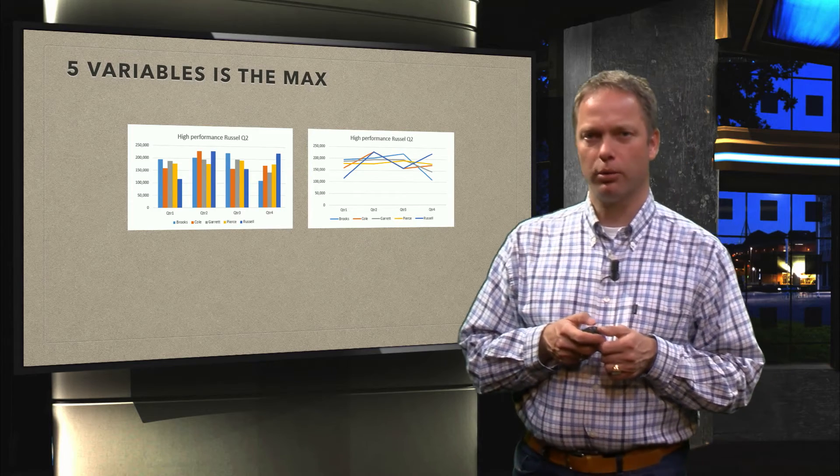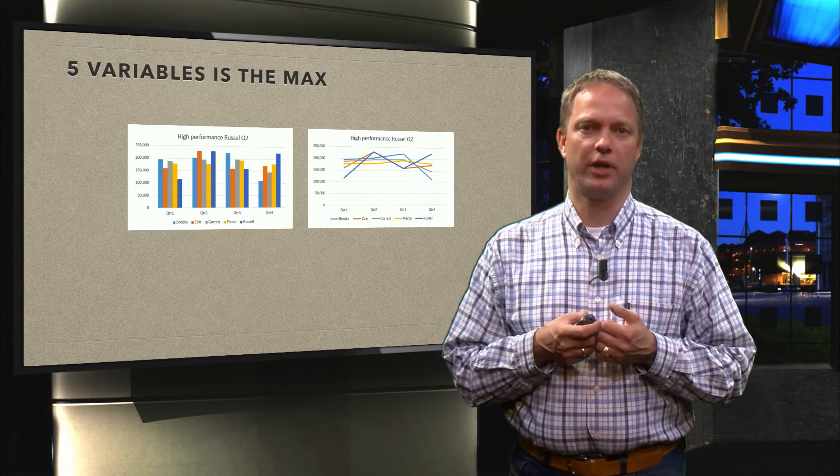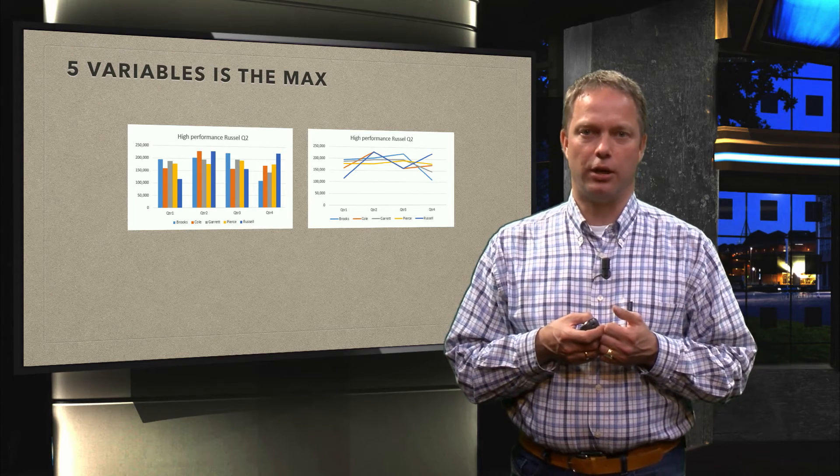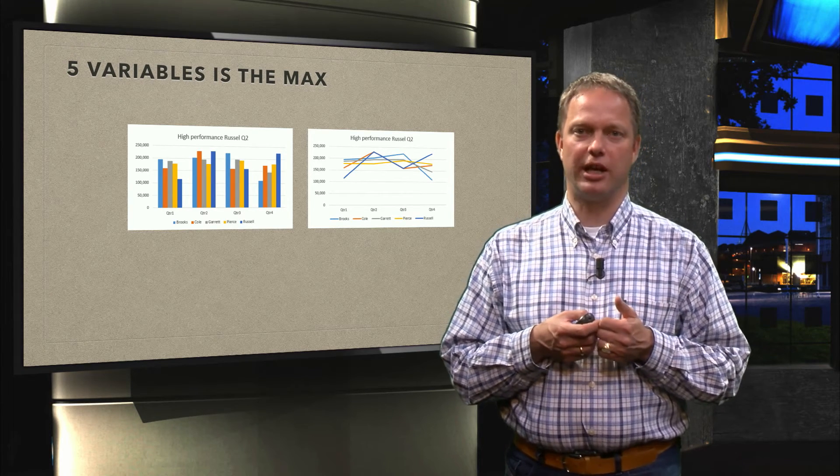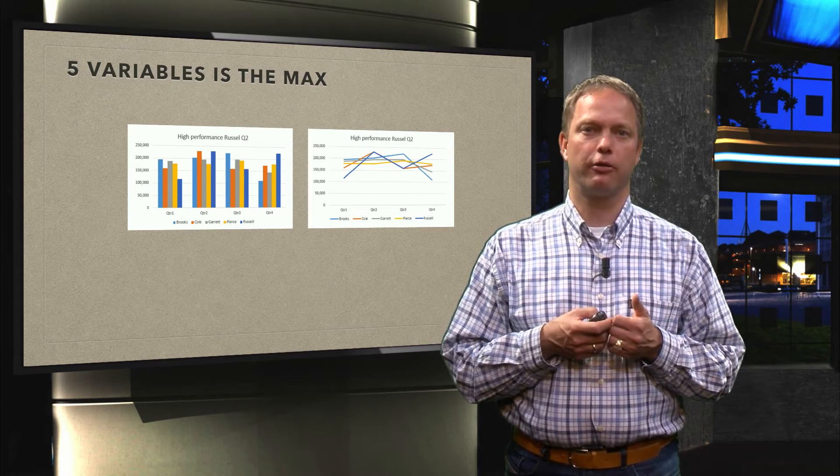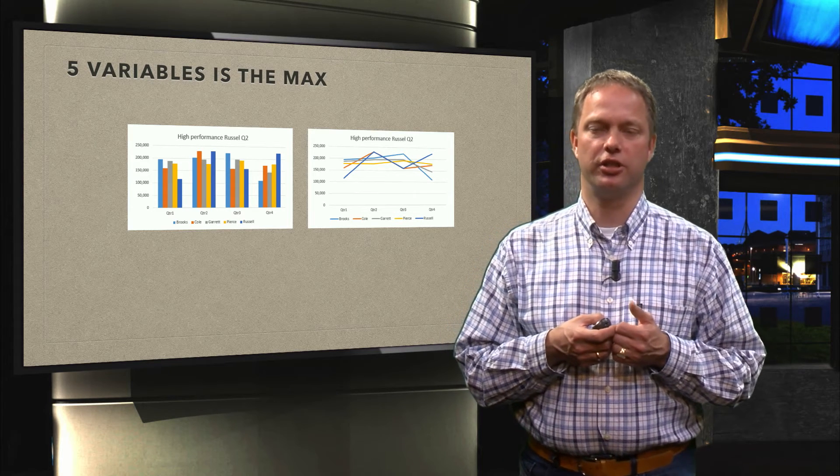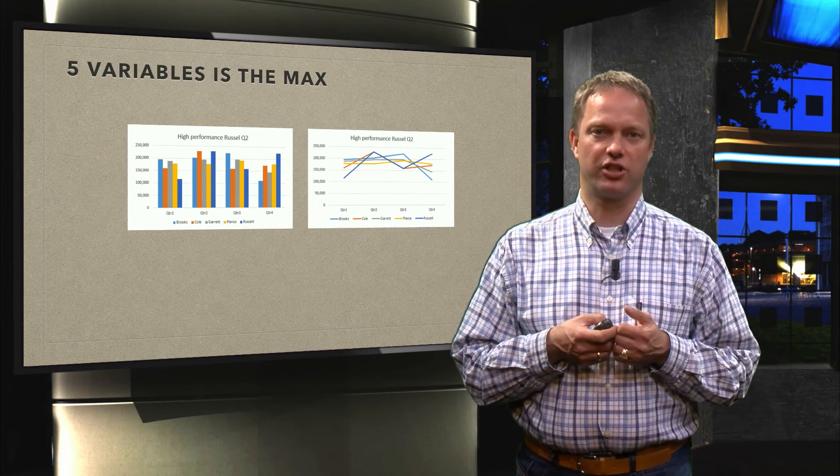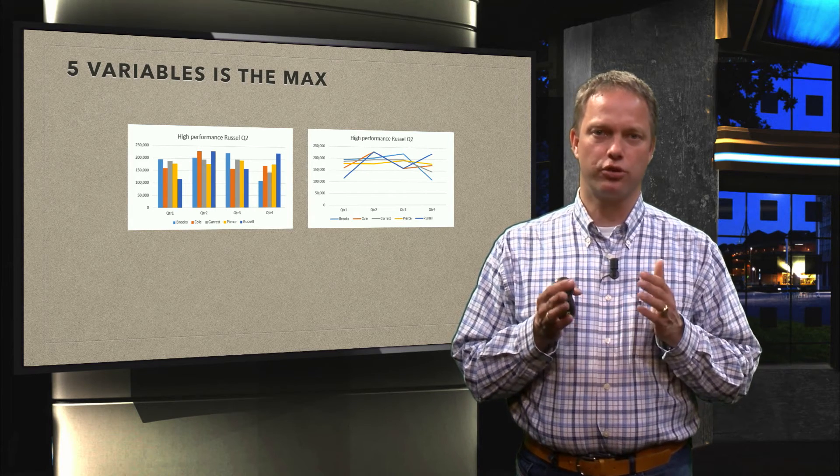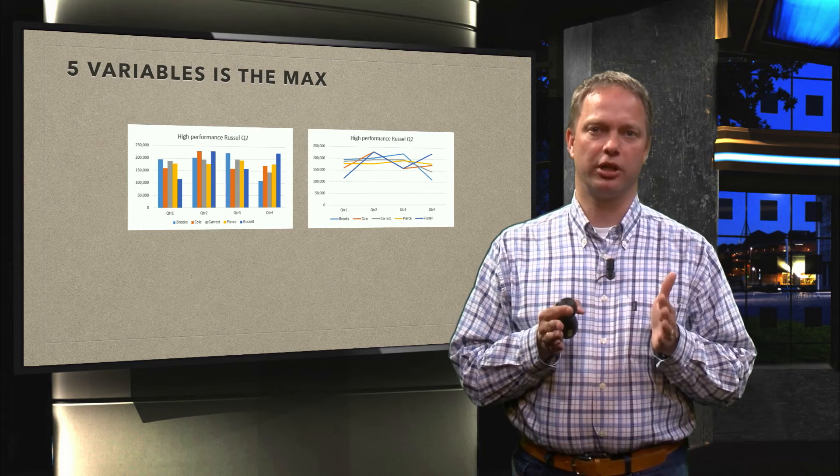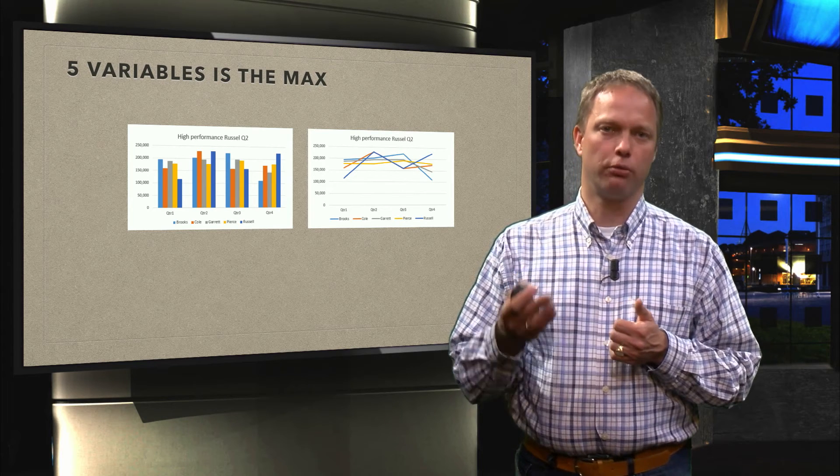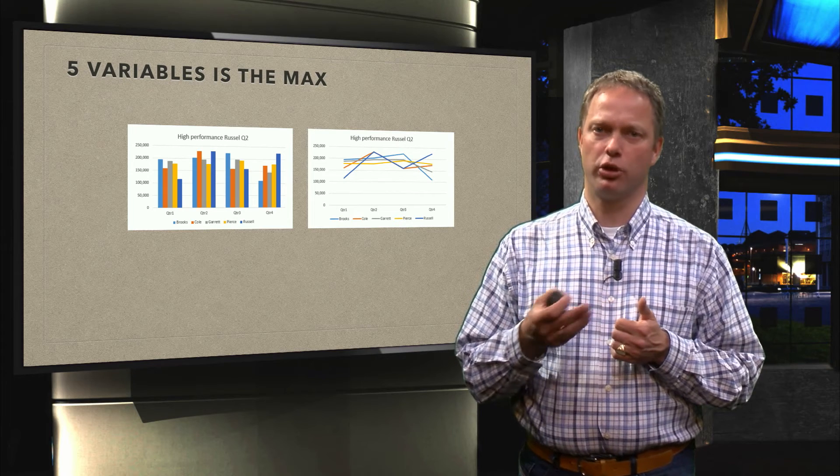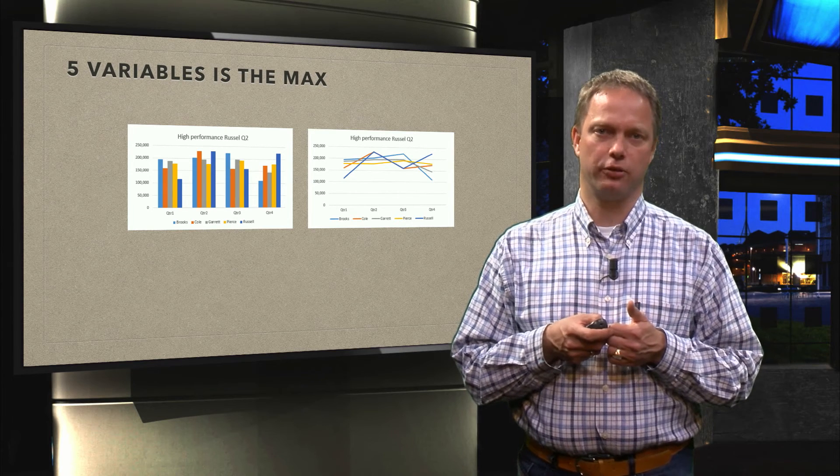Now another problem is that sometimes we have a lot of data. And we want to show it. Now short term memory can handle 7 things. But actually putting 7 variables in one graph is really not easy to understand. I would say 5 is the max. And even that, if I could somehow present the data without putting it all in one graph, I really would do that. But as a rule of thumb, 5 is the max. If it is more than 5, you have to find another solution.